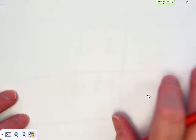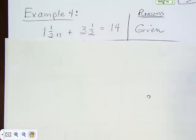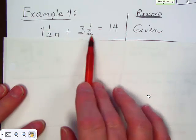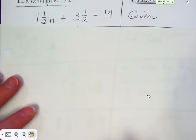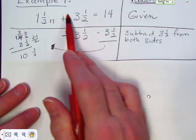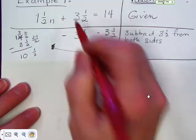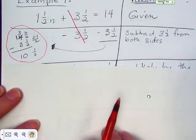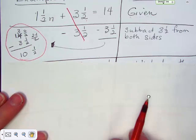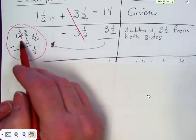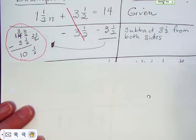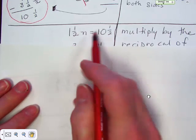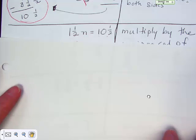Next page — another one with fractions. We have 1 and a half n plus 3 and a half equals 14. That is given. Now you're going to subtract 3 and one-half from both sides. That takes care of this — this goes away. However, you've got to do the math over here because you have to take 14 minus 3 and one-half. You had to borrow from the 14, make it 13 and 2 over 2, which is one-half. You end up with 10 and a half. But you're not done yet because you have 1 and one-half n equals 10 and a half, so I would change those both to improper fractions.